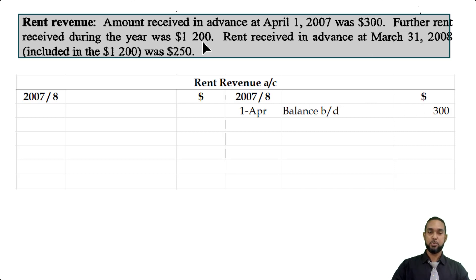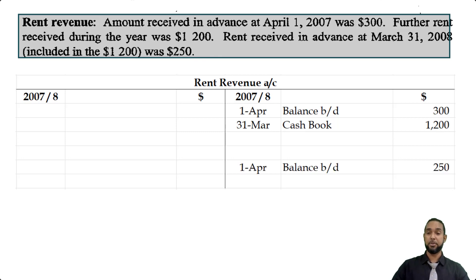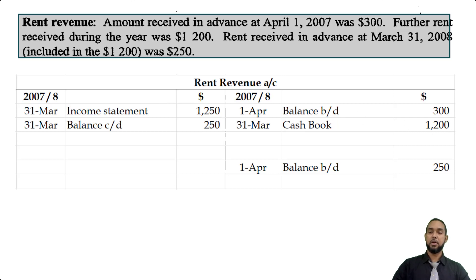Further rent received during the year was $1,200. When we receive money you debit the cash book and credit where it came from, so we credit the rent revenue account $1,200. Rent received in advance at the end of the year included in that $1,200 was $250 — that's still prepaid revenue, brought down on the credit side, but first carried down on the debit side. The missing figure is the income statement figure for rent revenue earned. Add up the items on the credit side, subtract the debit side item, and you get your figure. Totaling both sides gives the same total of $1,500.